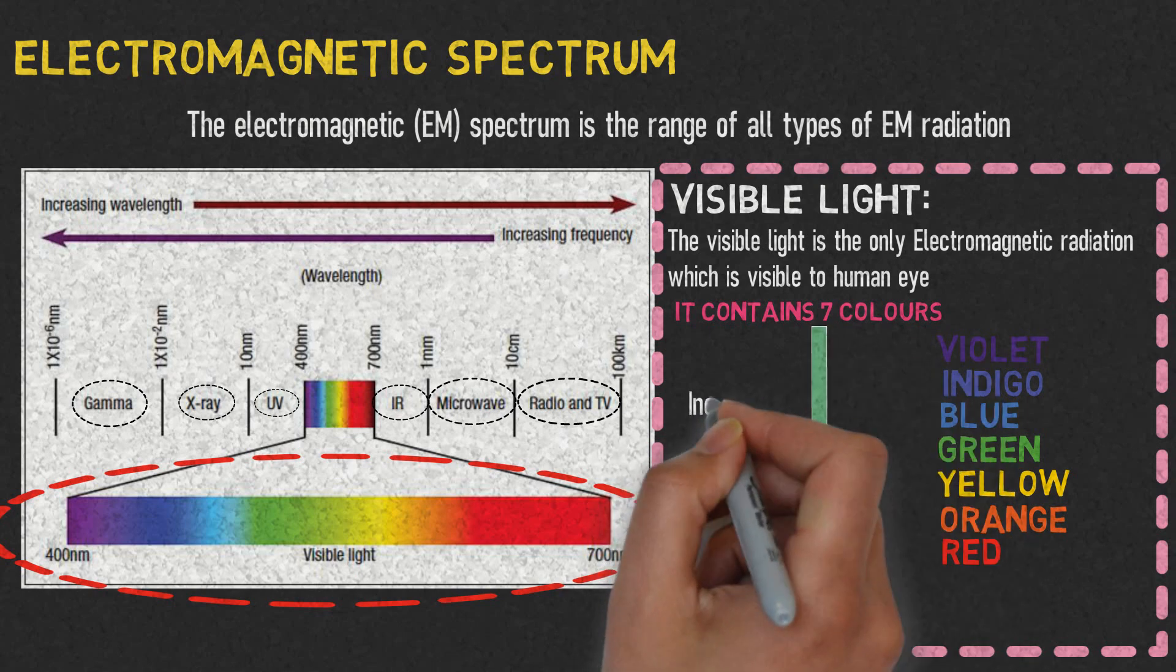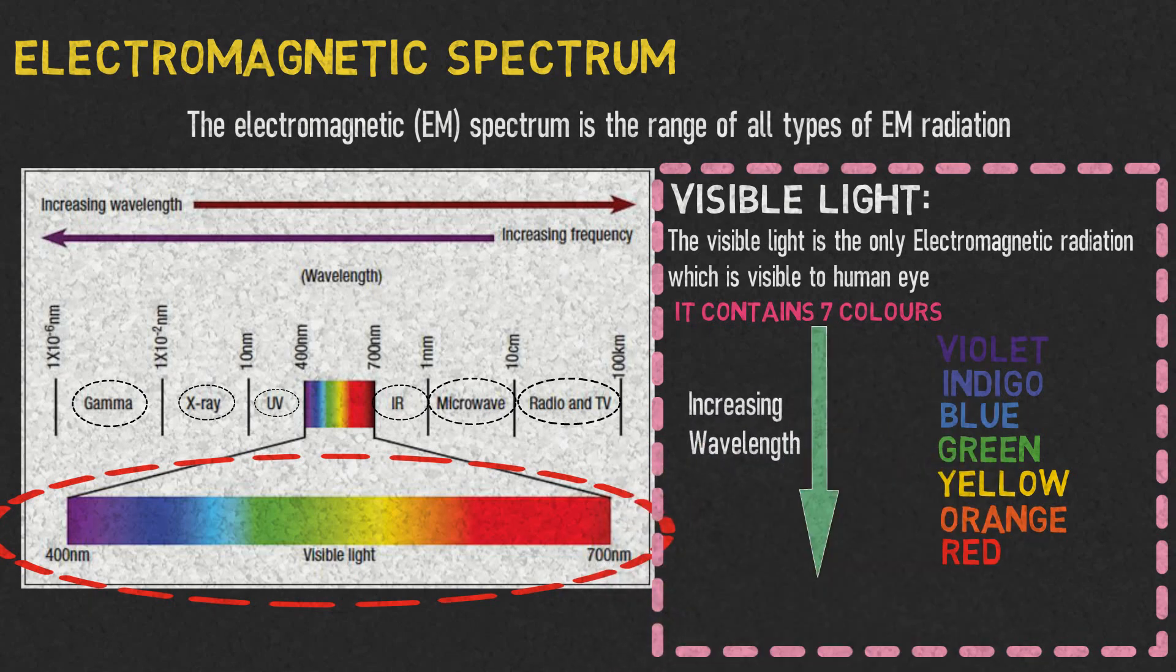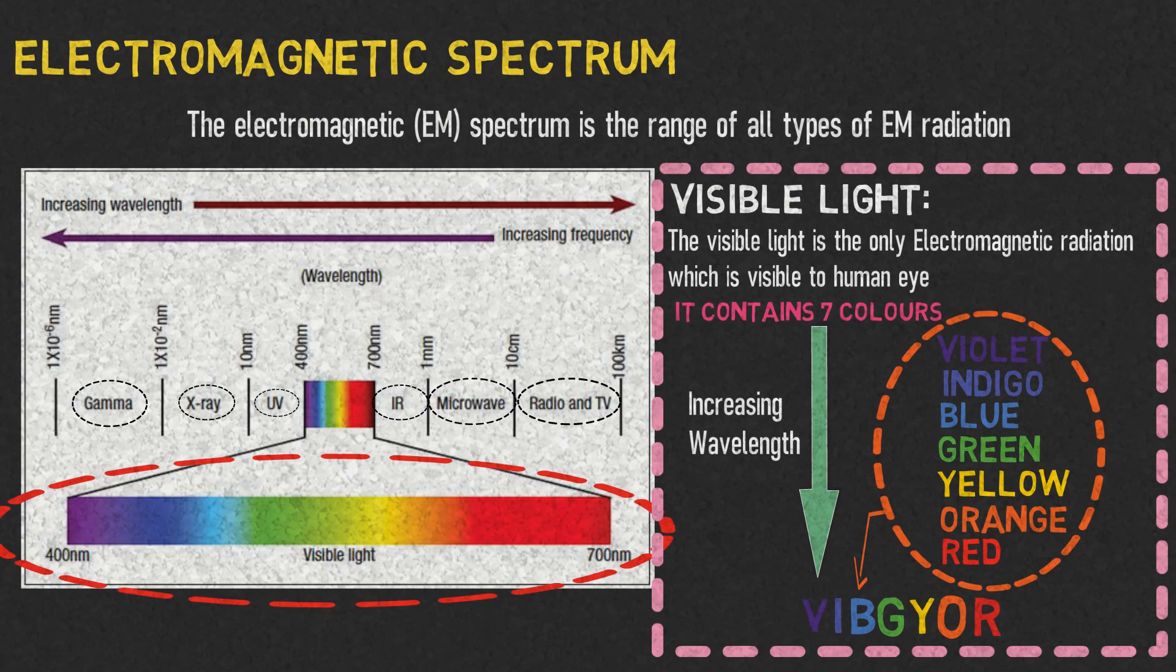The wavelengths of the colors are in increasing order from violet to red. The short form to remember these colors in order is VIBGYOR, made by taking the first letter of each color.